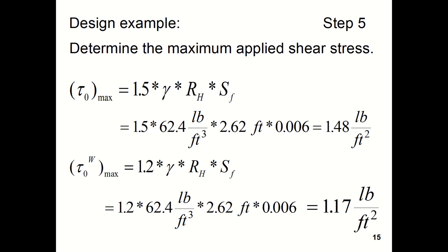So you can see the maximum applied shear stress on the bottom of the channel is 1.48 pounds per square foot. You can then also determine the maximum applied shear stress on the walls of the channel. And doing a similar computation, except you'll notice in the equation there's a 1.2 instead of a 1.5. So the maximum applied shear stress on the walls of the channel will be 1.17 pounds per square foot.